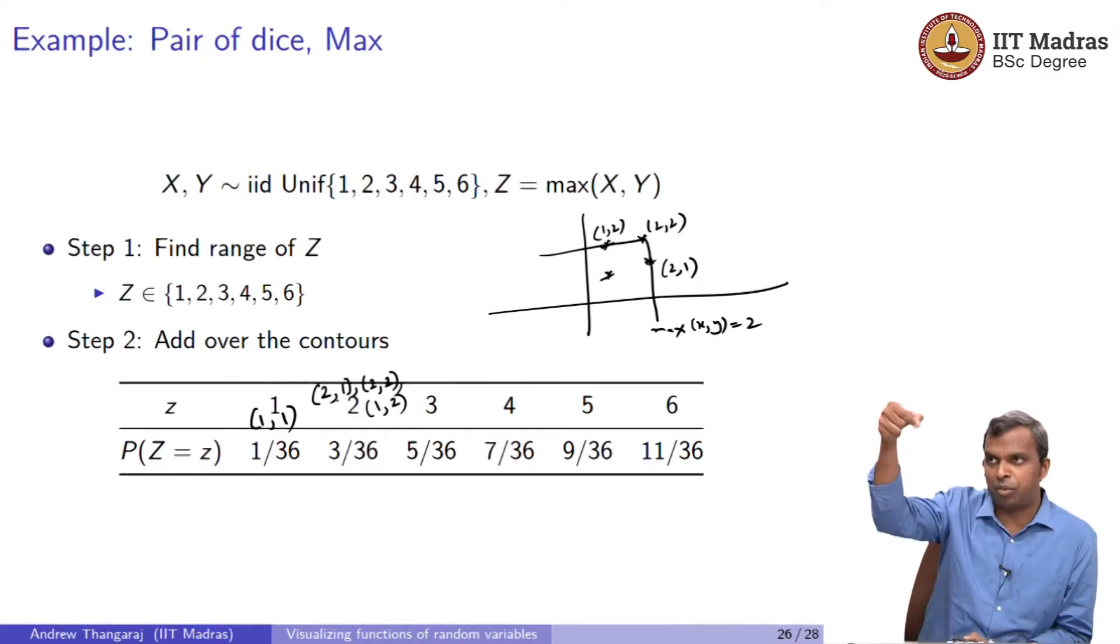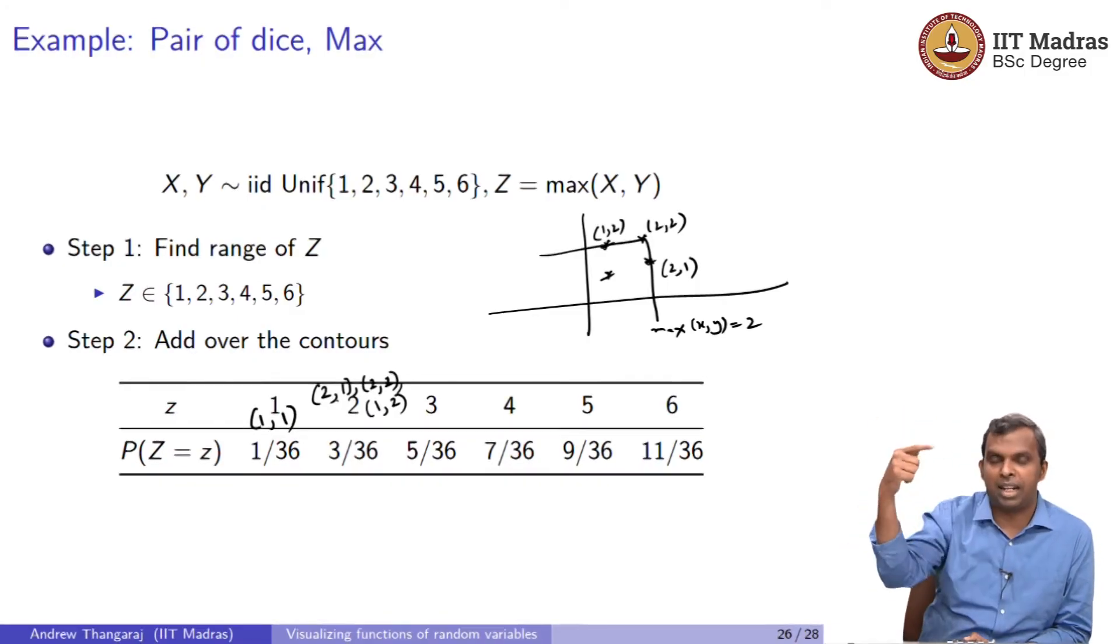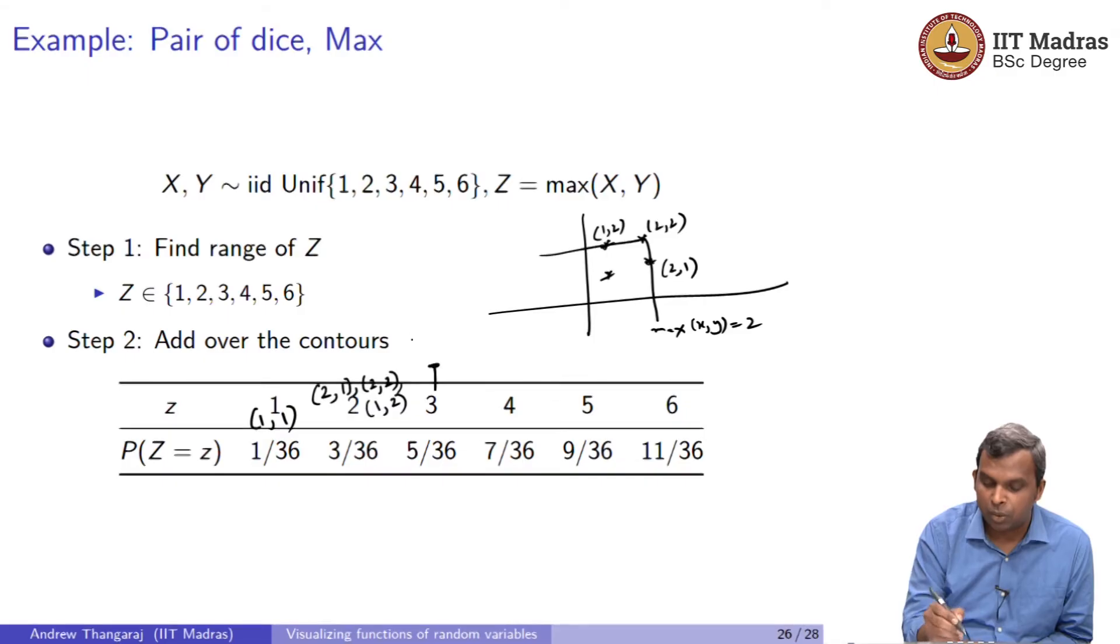You can even visualize graphically from 2 comma 2, I have to go down or to the left. I get 2 more possibilities. Think that through a little bit, take some time. We'll do this for 3. You will again get 3 comma 1, 3 comma 2, 3 comma 3, and then you will go down below 2 comma 3, 1 comma 3. So you have 5 possibilities.